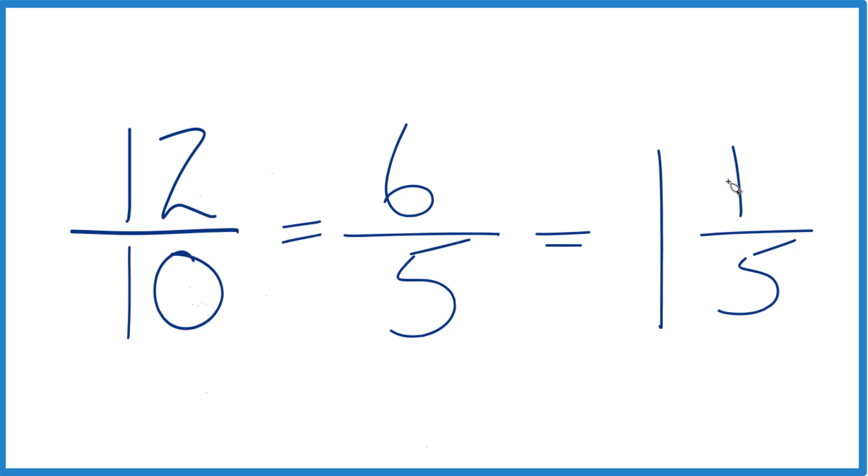And 12 tenths, that also equals 1 and 1 fifth. And you can check that because 1 times 5 is 5, 5 plus 1, that's your 6. Keep the denominator the same, and that's how you do it.